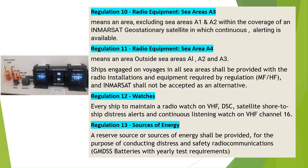Regulation 11: Radio Equipment — Sea Area A4. Means an area outside Sea Areas A1, A2, and A3. Ships engaged on voyages in all sea areas shall be provided with the radio installations and equipment required by the regulation. MF/HF radio shall be used, and INMARSAT shall not be accepted as an alternative.